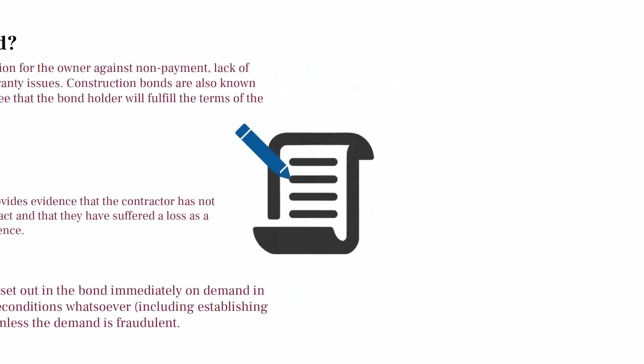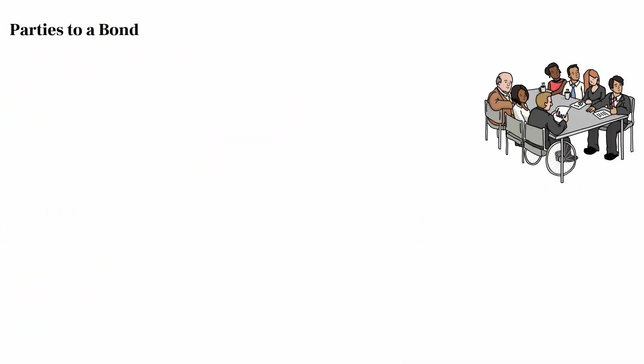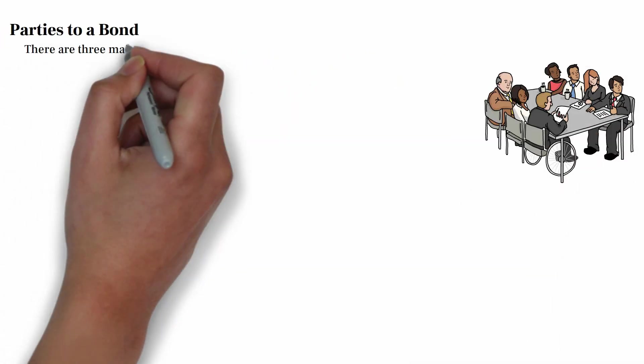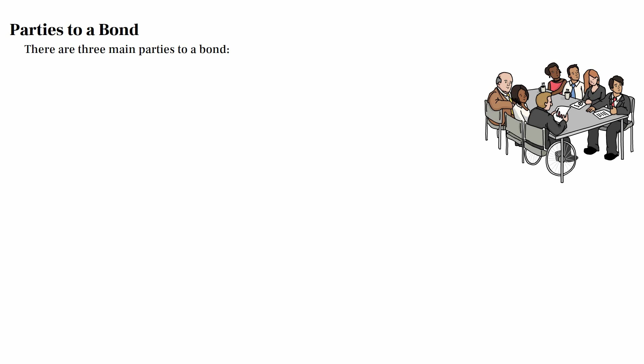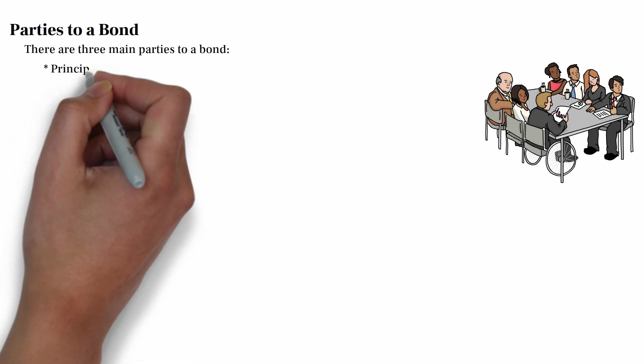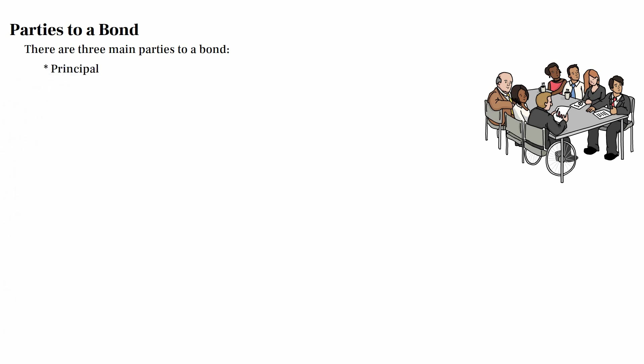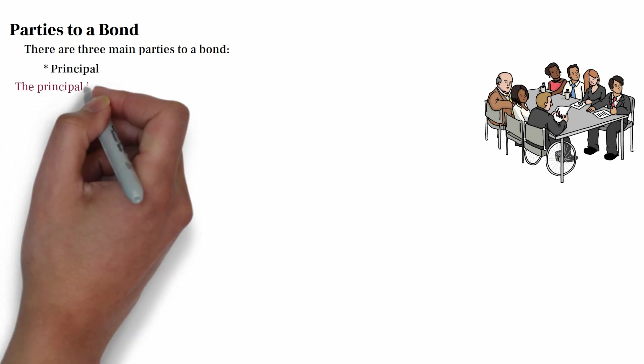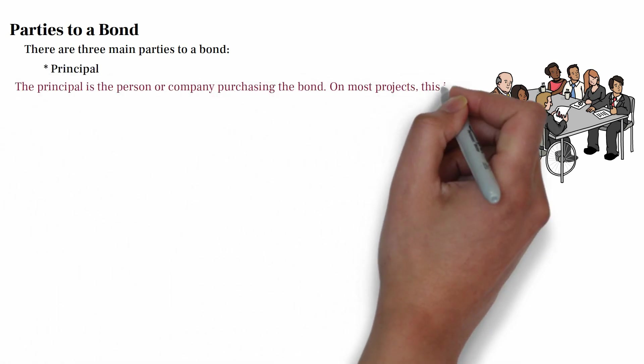There are three main parties to a bond. The principal is the person or company purchasing the bond. On most projects, this is usually the general contractor or a subcontractor.